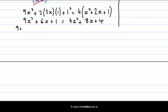So I get 9x squared minus 4x squared plus 6x minus 8x plus 1 minus 4 equal to 0. That's 5x squared minus 2x minus 3 equal to 0.